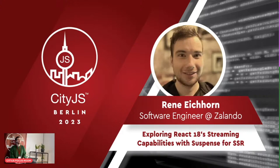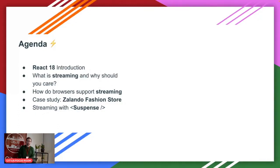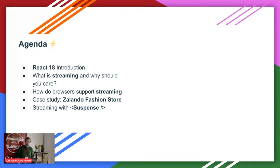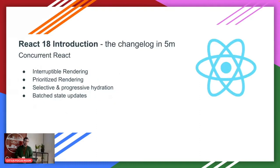And who of you knows what SSR is? That's a very good starting point. So just as a quick overview, I'm going to do a short React 18 introduction for those not super into the latest changes, and also the changes relevant for streaming. I'll go into what streaming actually is, bring a case study of how we at Zalando use it to deliver a fast website, and finally go through some code showing how it works and how any of you could do it. A shout out to the React.dev website — if you want a more detailed overview, go to the docs.